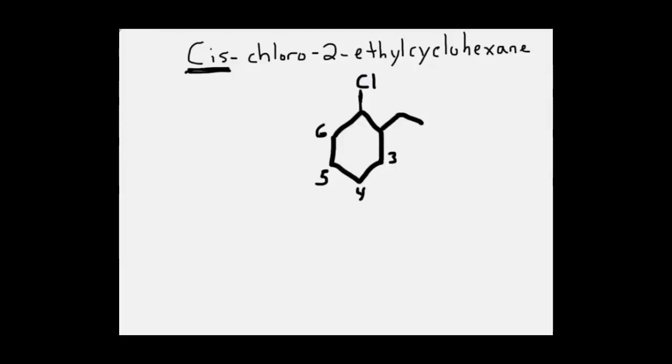Two ways to do that. The bonds going out from the cyclohexane ring to the chlorine and to the first carbon of the ethyl group can both be dashes or both be wedges. Either way gives us the same compound and shows that those substituents are both on the same side of the ring.